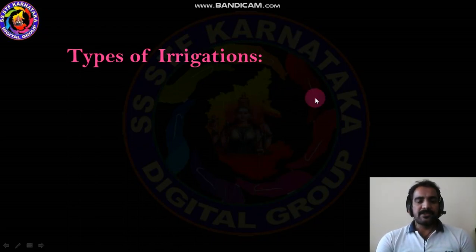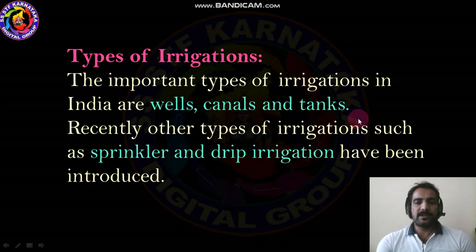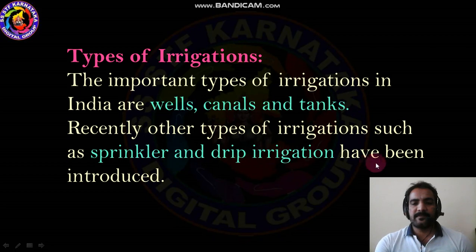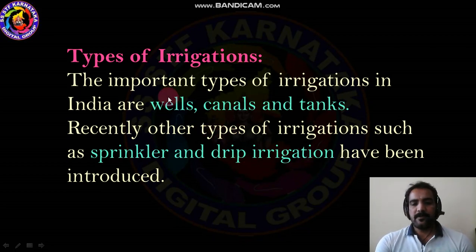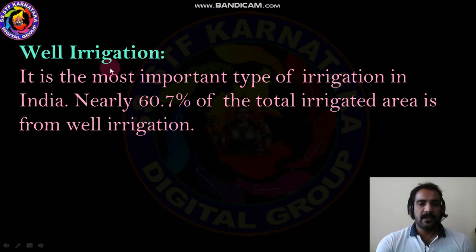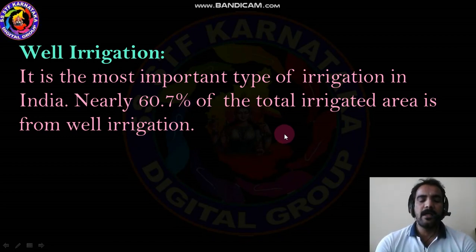Now, what are the different types of irrigation? There are important types of irrigation seen in India: well irrigation, canal irrigation, and tank irrigation. Recently, other types like sprinkler and drip irrigation have also been introduced. Well, canal, and tank irrigation are the most important types practiced in our country. Let us discuss about well irrigation.